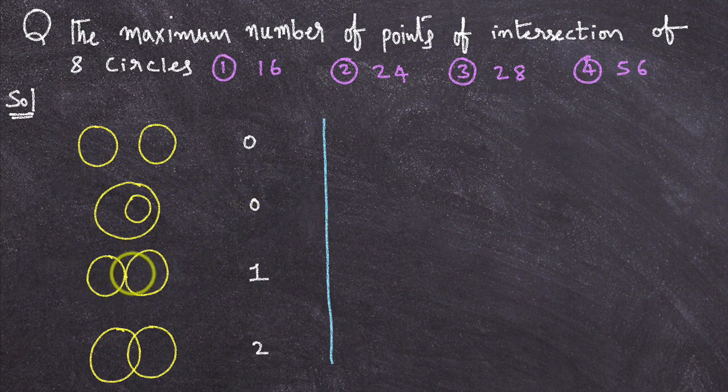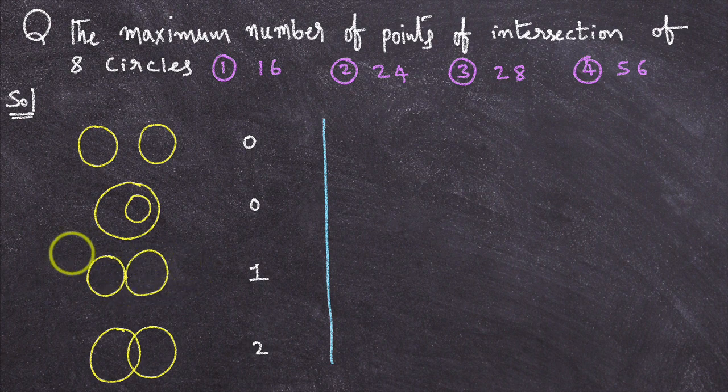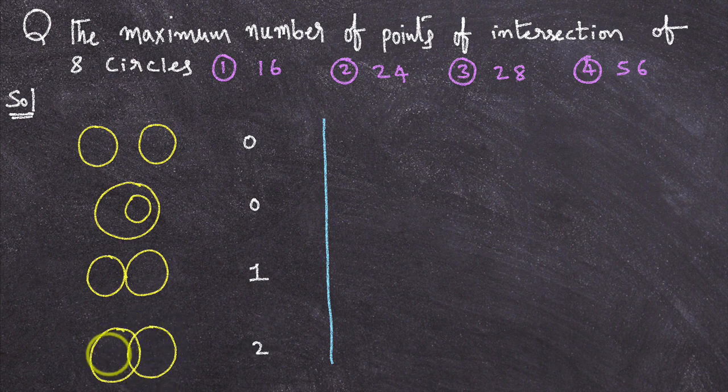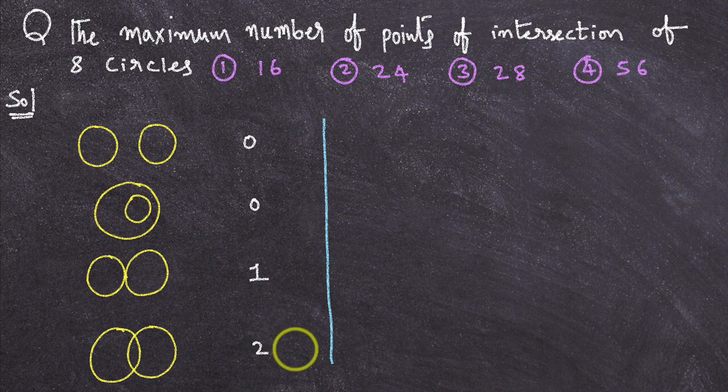If the circles touch each other externally, then how many points of intersection will you get? 1. When the circles intersect each other like this, then how many points of intersection will you get? 2 points of intersection.